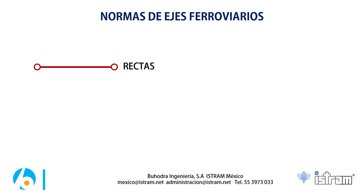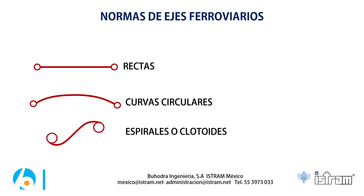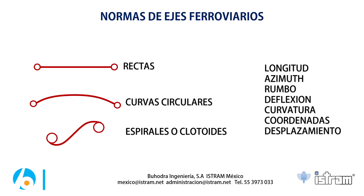Antes de comenzar, deberemos hablar de que podríamos tener elementos de todo tipo: rectas o curvas. Existen otro tipo de elementos que conectan rectas o curvas, que se llaman espirales o clotoides. En ISTRAM se denominan curvas de transición. Este tipo de entidades tienen diferentes propiedades, entre ellas longitud, azimut, rumbo, deflexión, curvatura, coordenadas o algún tipo de desplazamiento, entre muchas otras cosas.